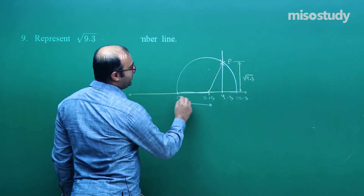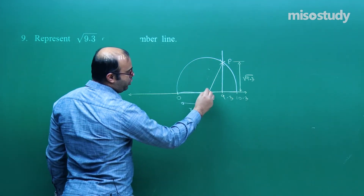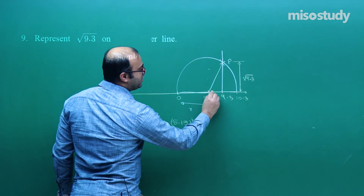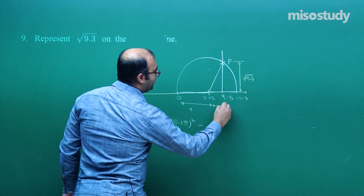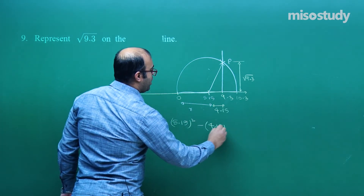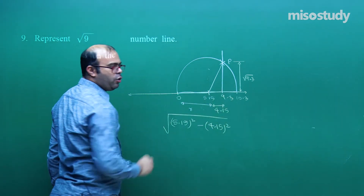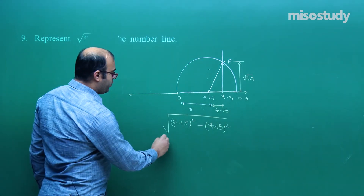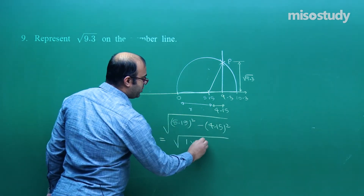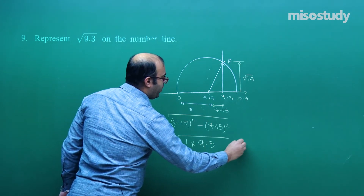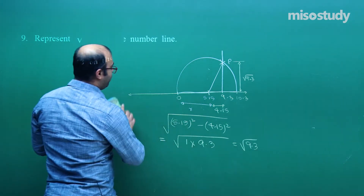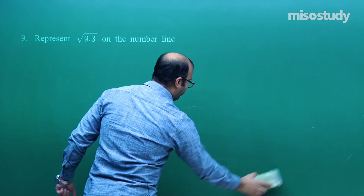Why is this length √9.3? The hypotenuse of the right triangle is 5.15. The base from center to 9.3 is 9.3 − 5.15 = 4.15. Applying the Pythagorean theorem: the perpendicular = √(5.15² − 4.15²) = √((5.15 − 4.15)(5.15 + 4.15)) = √(1 × 9.3) = √9.3. This method applies generally for finding the square root of any number on the number line.